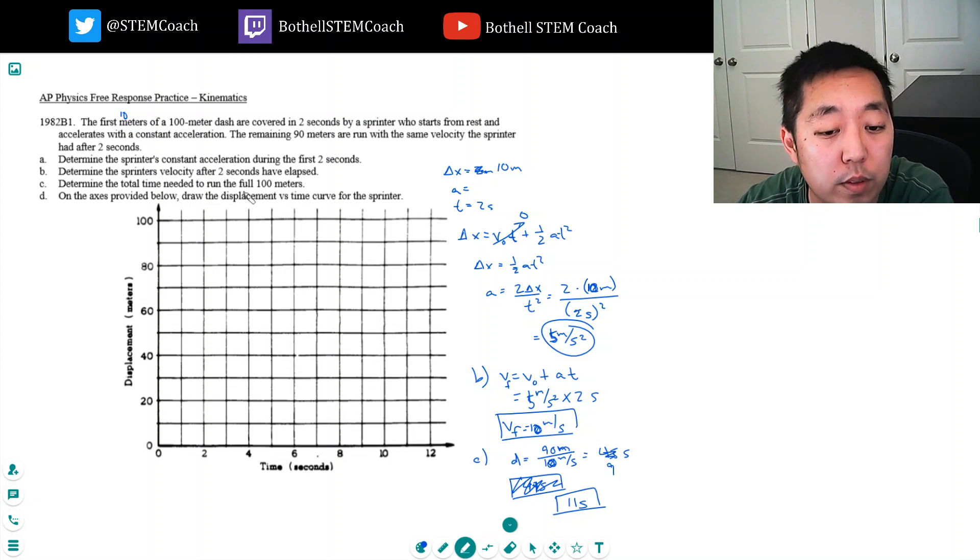The total time needed to run the 100 meters is 11 seconds. So the first two seconds he travels 10 meters.